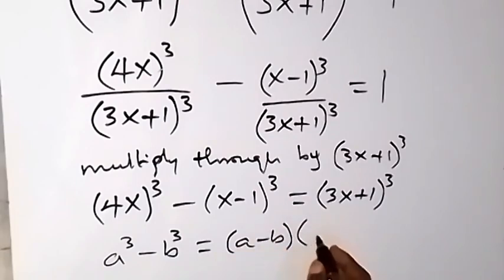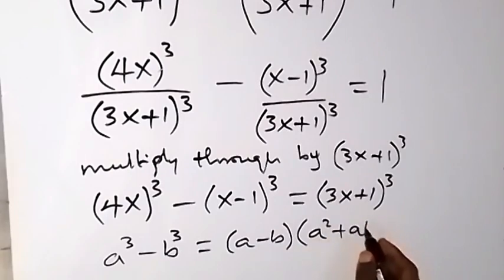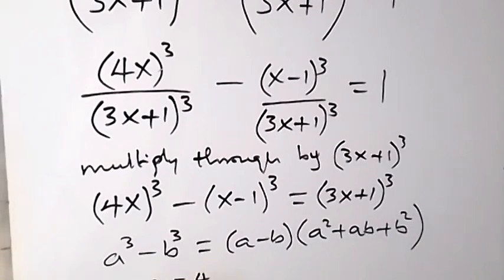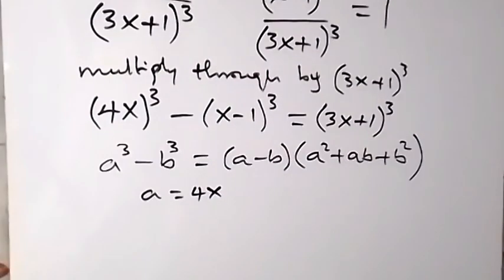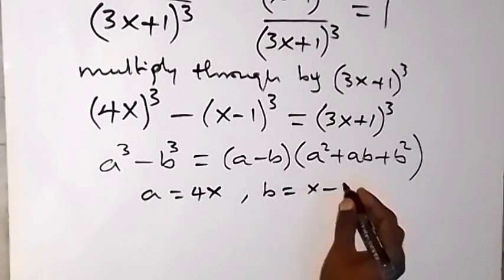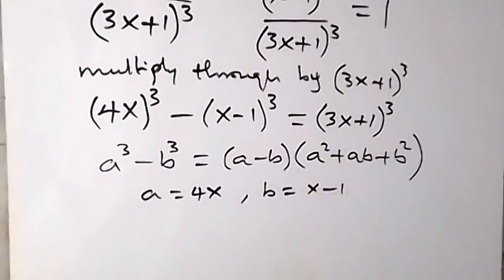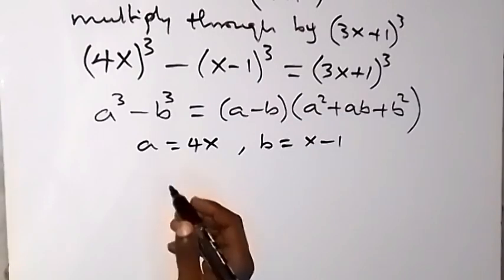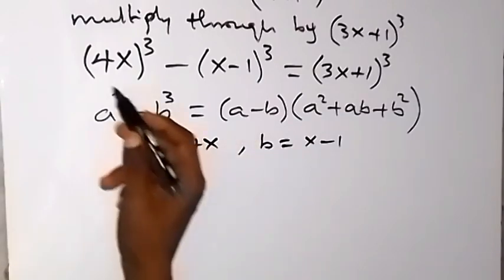The identity expands as (a - b) multiplied by (a² + ab + b²). We compare a as 4x and b as (x - 1). So we can rewrite the expression using this identity.